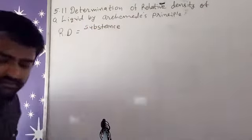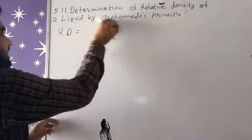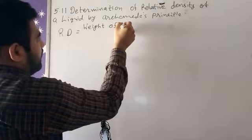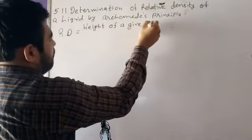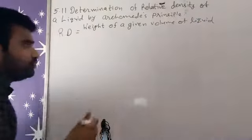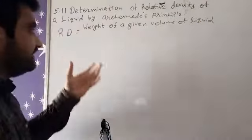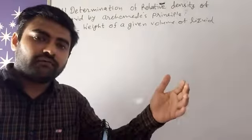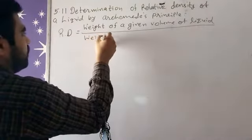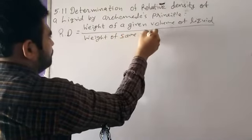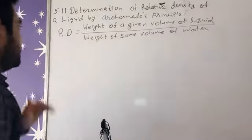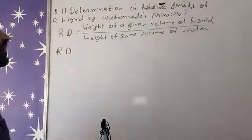Starting from weight of a given volume of liquid — whatever liquid it is, the relative density is for that liquid, where the liquid is different and water is also different. So here we are talking about the liquid. Similarly, weight of same volume of water is in the denominator.